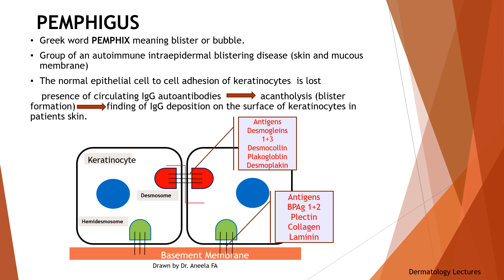The word pemphigus is derived from the Greek word 'pemphix' meaning blister or bubble. It is a group of autoimmune intra-epidermal blistering diseases of the skin and the mucous membranes. Every blistering disease has an antigen targeted by an antibody. The normal epithelial cell-to-cell adhesion of the keratinocytes is lost because of circulating IgG autoantibodies acting against cadherin-type cell-to-cell adhesion molecules in the desmosomes — that is desmogleins.